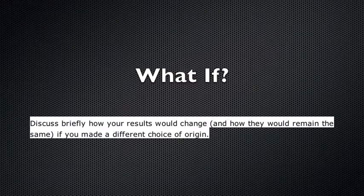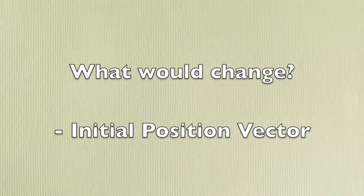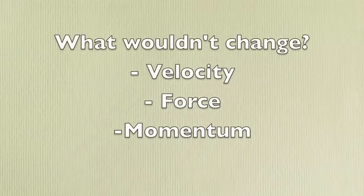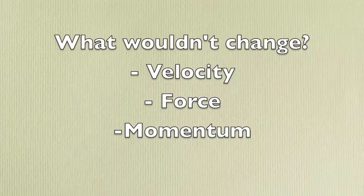What would have happened if I had chosen a different origin? The initial position vector would change because I would have a different starting position. However, velocity, force, and momentum would not change because the initial force was not affected, and there were no other forces acting on the ball, except for friction which we ignore.